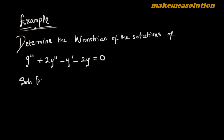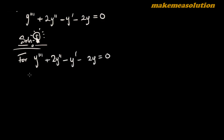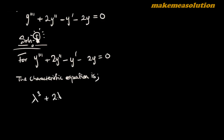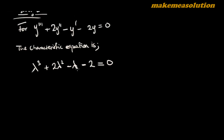The first thing is to find the solution of this third-order homogeneous differential equation. For y''' + 2y'' - y' - 2y = 0, the characteristic equation is: λ³ + 2λ² - λ - 2 = 0. This is our characteristic equation, and now let's simplify it.